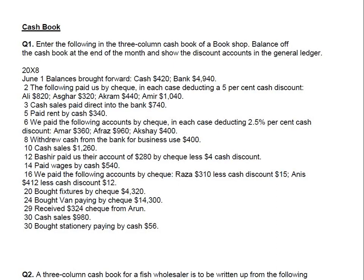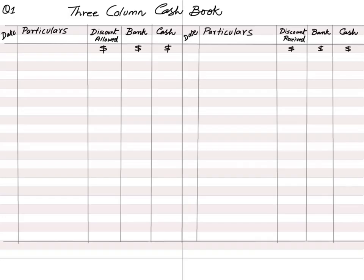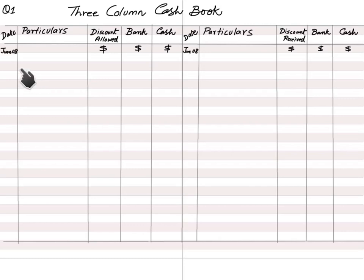Before going forward, pause the video and take a picture of the screen for reference. The columns are already drawn — in a CIE examination question these columns are pre-drawn. There are two sides: the left-hand side is the debit side and the right-hand side is the credit side. We write June 2008 at the start of both sides so we don't need to repeat it for every transaction.